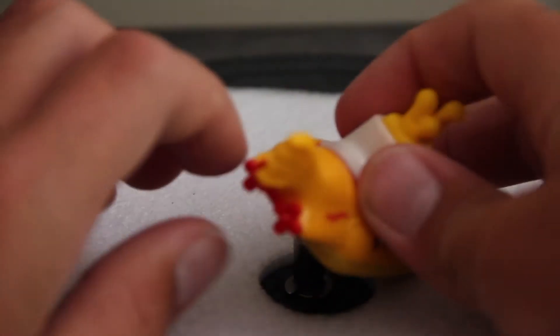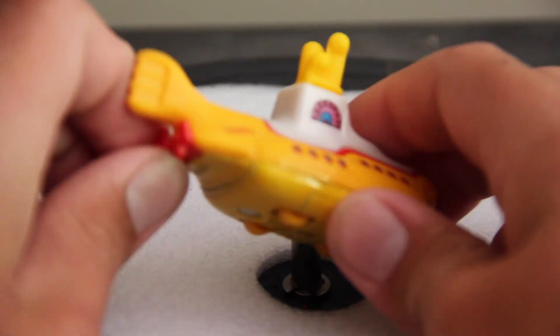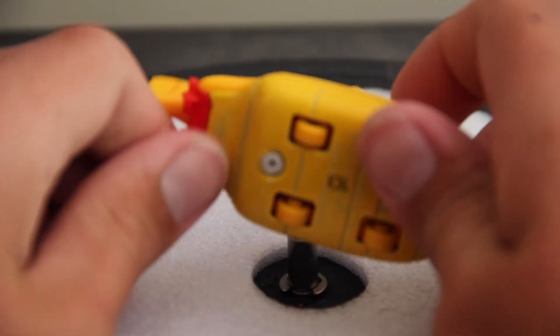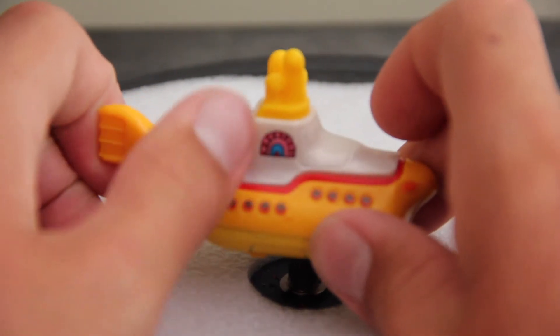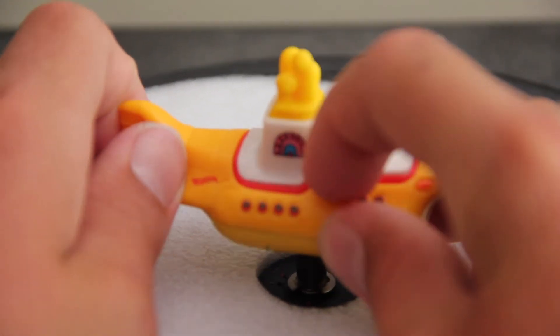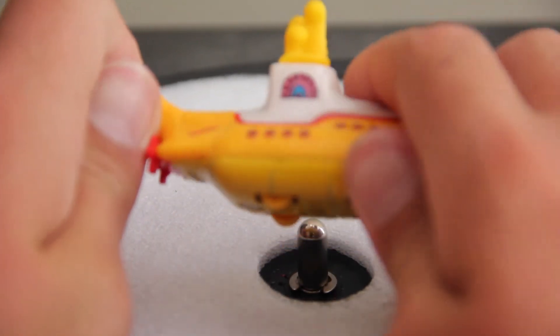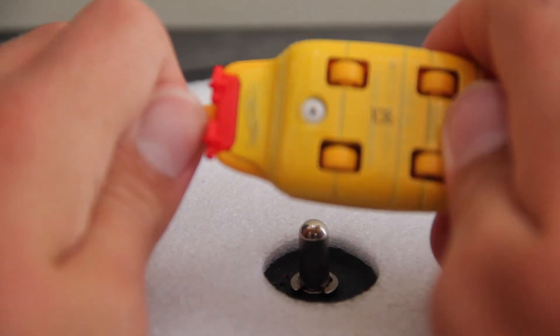And then on the back here we have some nice propellers. Sadly, they do not rotate. But they are a different piece of plastic which is a nice touch. So that propeller piece there, it's actually the same piece as this red outline here. So the metal parts of this model are the base. That's about it.